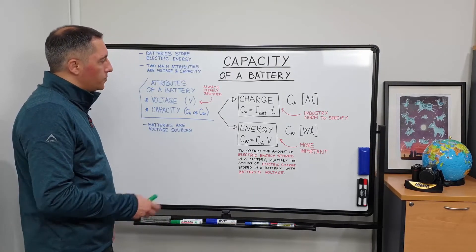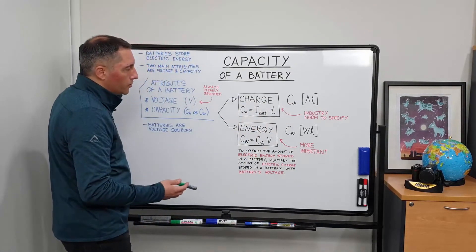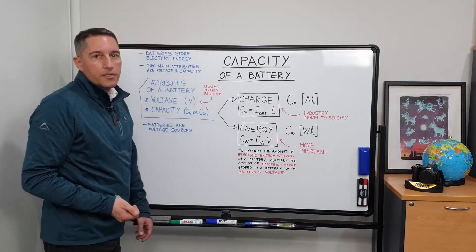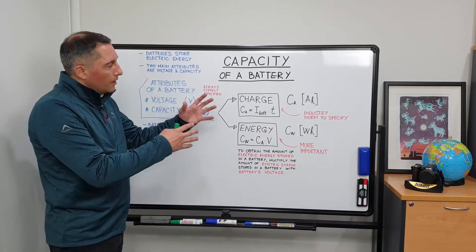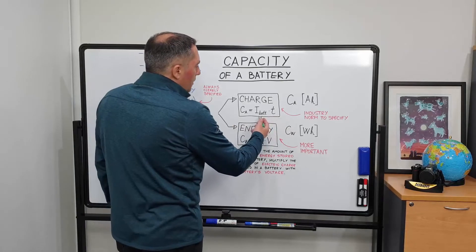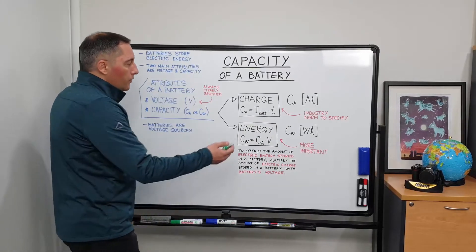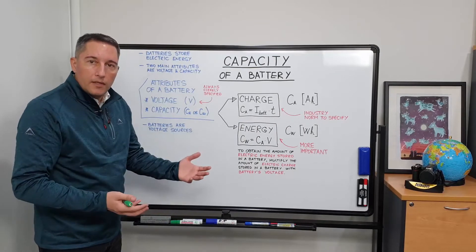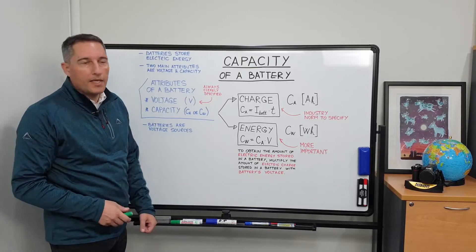One good way to distinguish between the two is to look at the unit. When we talk about electric charge stored in the battery, we normally express it in amp hours. In electrical engineering we sometimes use Coulombs, but amp hours is actually a better unit because it tells us how much current a battery can provide and for how long. If we have a certain capacity expressed in amp hours, we can drain that battery for one hour with as many amps as the capacity value.